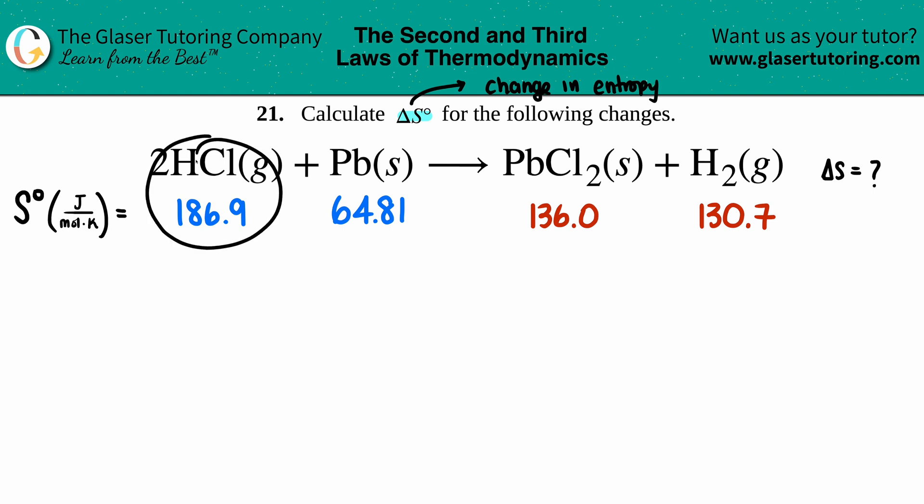I found the standard S° values: HCl(g) is 186.9, Pb(s) is 64.81, PbCl₂(s) is 136.0, and H₂(g) is 130.7. I don't have these memorized—your teacher won't make you memorize them. They'd either be given to you on a test or quiz.